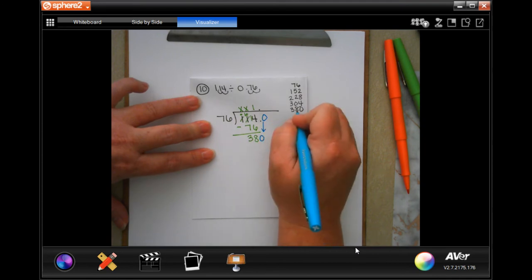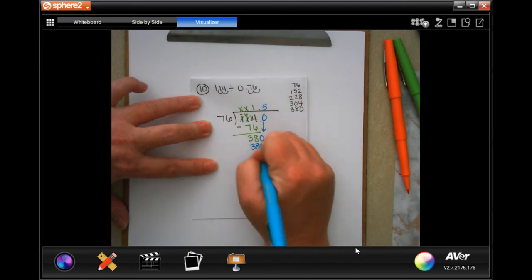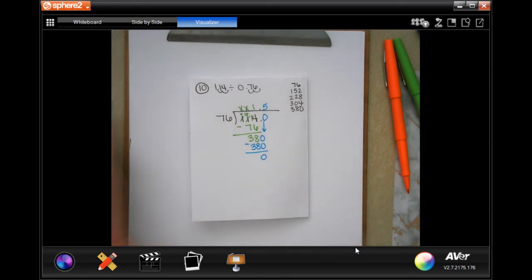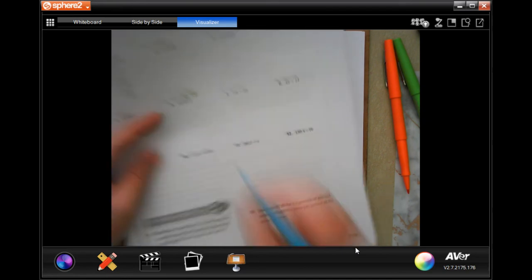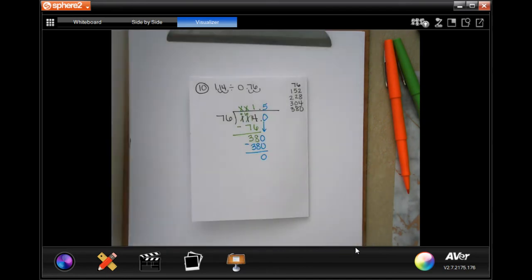Now comes that part where I need to add that zero and bring it down. Five times 76 was 380. There you go. 1.5. So for number 10, the answer will be 1.5.